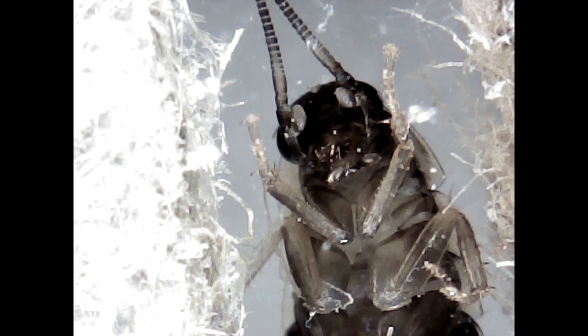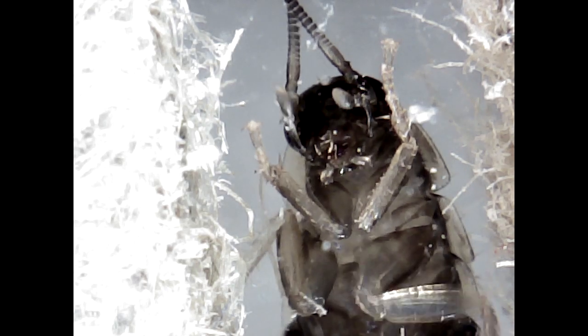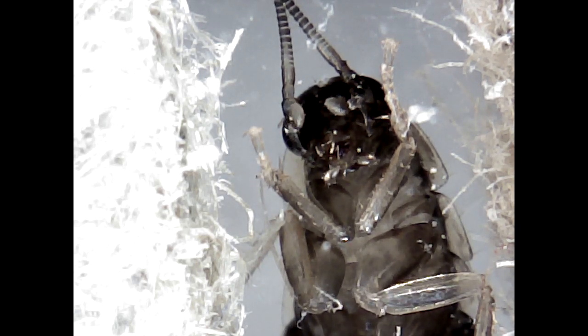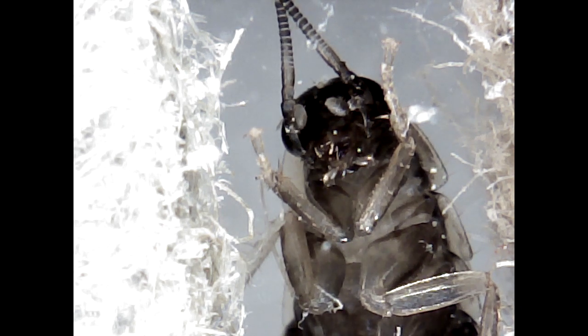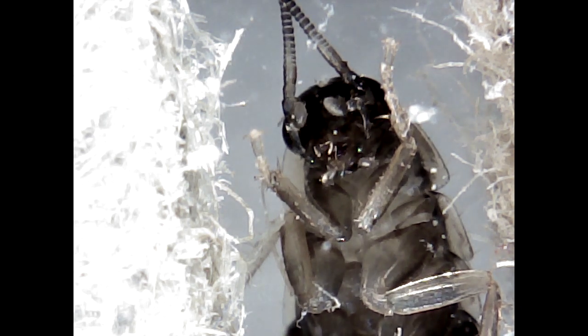Cockroaches are somewhat generalized insects without special adaptations like the sucking mouth parts of aphids and other true bugs. They have chewing mouth parts and are likely among the most primitive of living Neopteran insects.